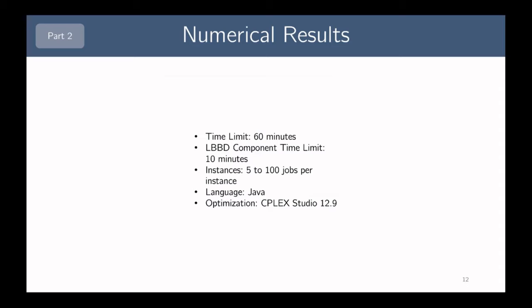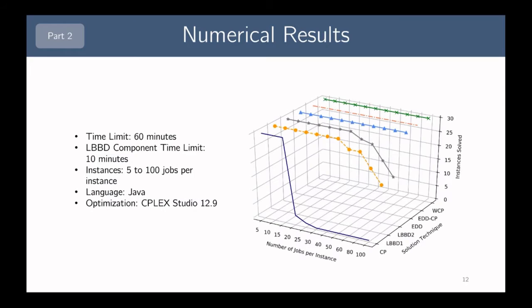We tested these solution approaches on instances with five to 100 jobs per instance, given a time limit of 60 minutes, as well as an LBBD component time limit of 10 minutes to prevent timeouts. The CP model and the two LBBD models show signs of degrading performance at less than 100 jobs per instance — which is not promising, since real-world instances have on average about 4,000 jobs. The MIP model was not even on the graph because it was not able to solve a single instance.